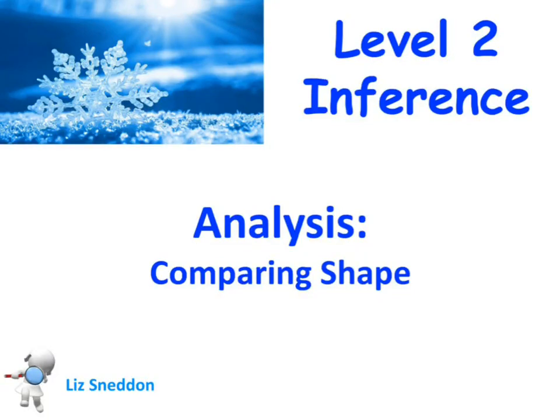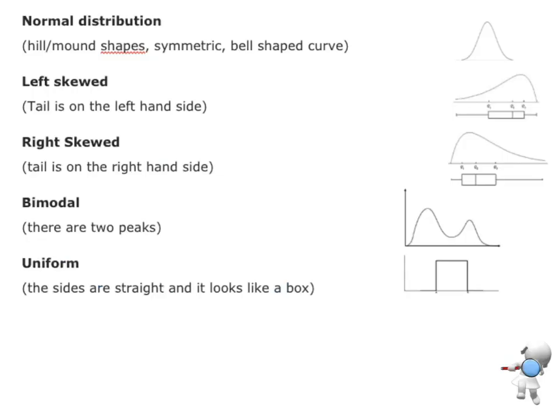Let's have a look at comparing the shape of two sets of data. We've got our different shapes here with the pictures on the right hand side. We've got our normal distribution which is when you've got one hill, reasonably symmetric. Left skewed means you've got lots of data on the right hand side with a long tail on the left.